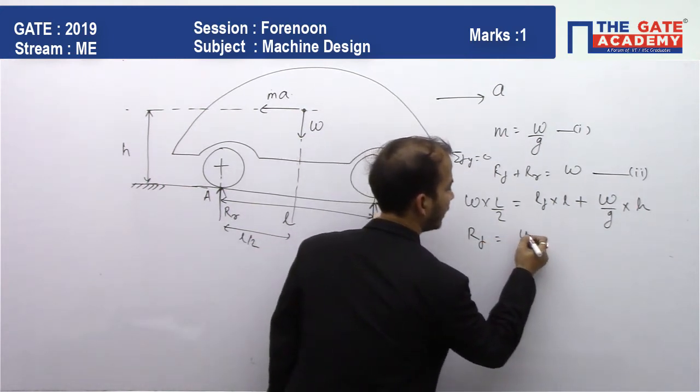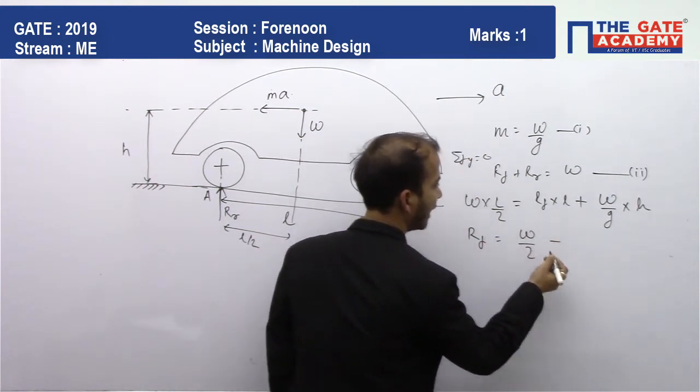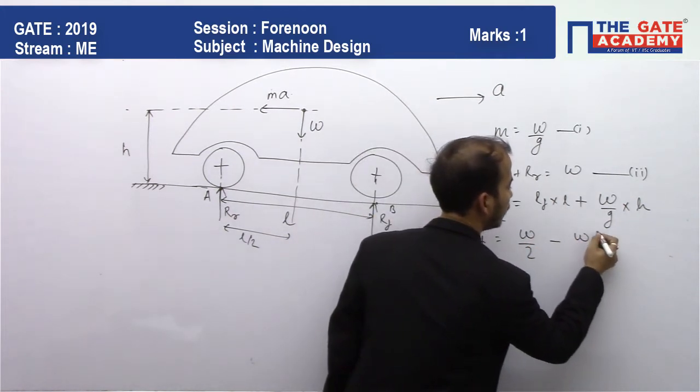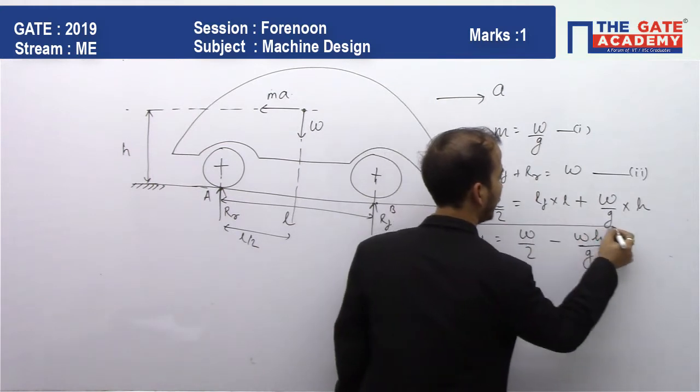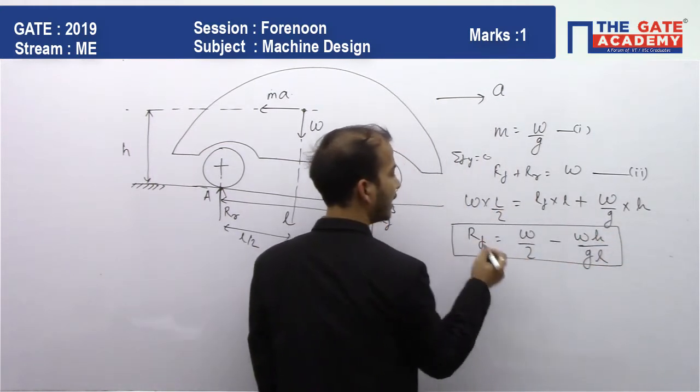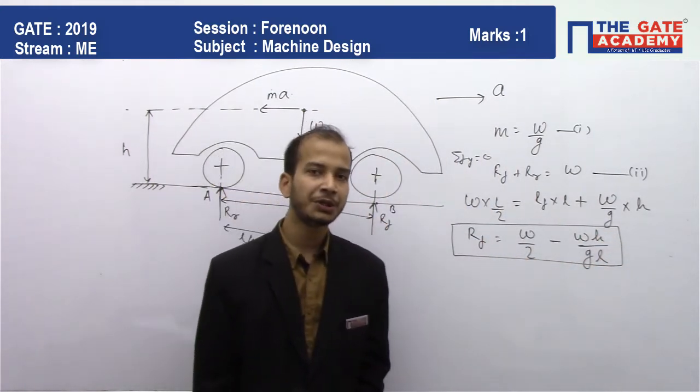From here, we'll get the value of Rf. How much? W by 2 minus Wha by gl.